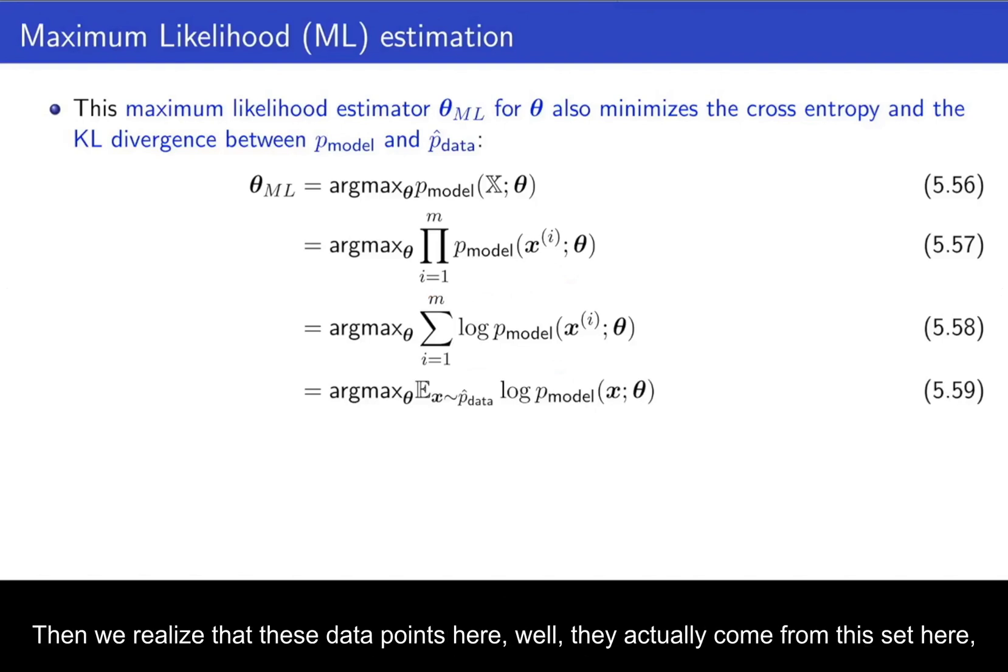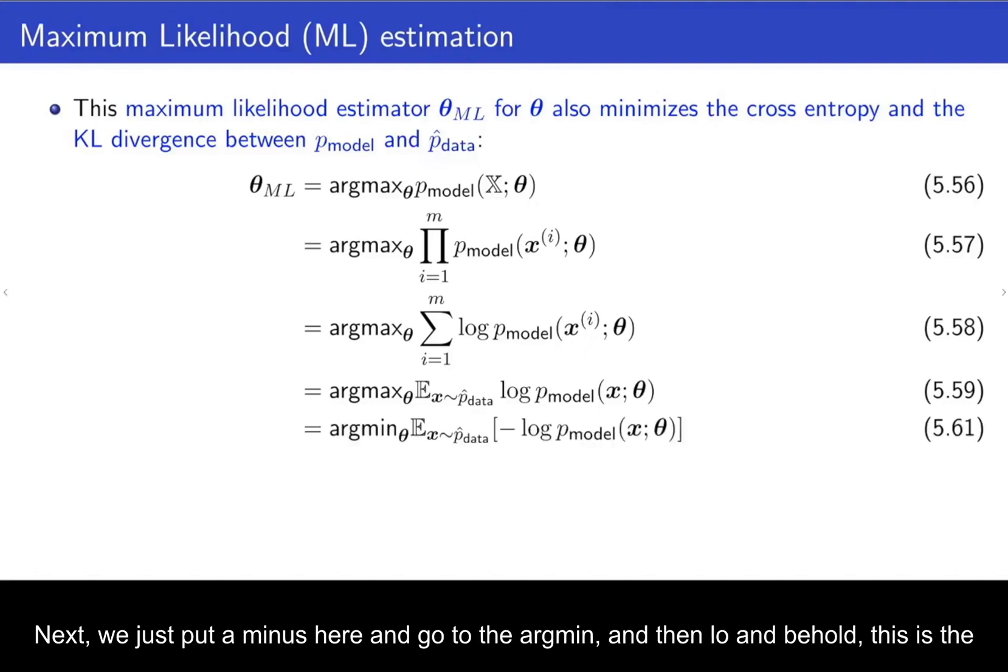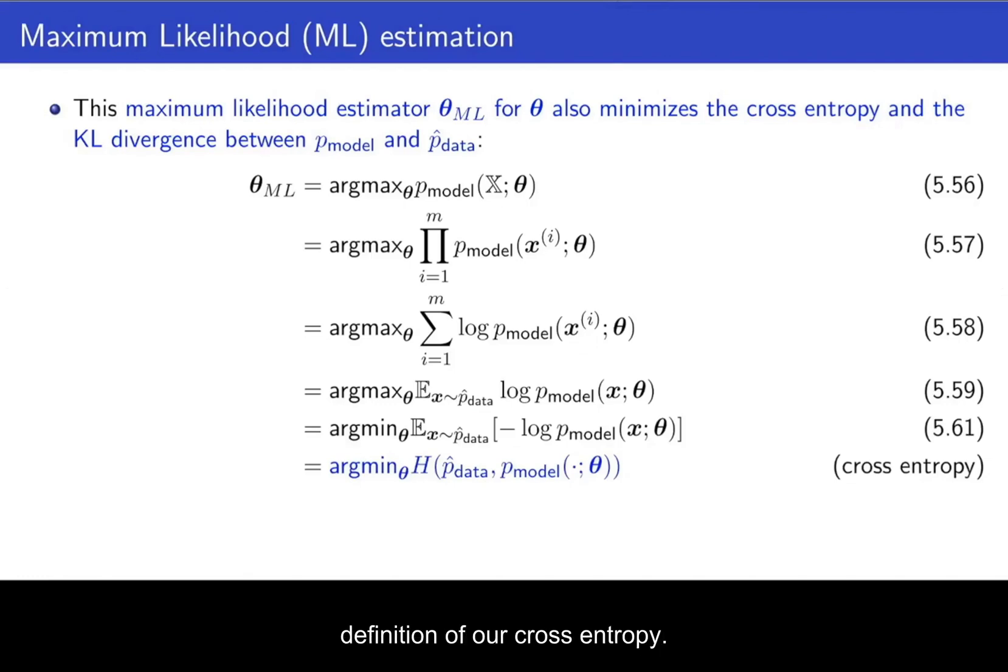Then we realize that these data points here, well, they actually come from this set here. And the set is defined by this data generating distribution, p_sub_hat. We don't know the true data generating distribution. We only know this empirical data generating distribution. And so we can write this individual samples from this set as just, well, the expectation over the data generating distribution here. Next, we just put a minus here and go to the argmin. And then, lo and behold, this is the definition of our cross entropy. It's the expectation of the negative log likelihood of the data under the model, where the data comes from this empirical data generating distribution.